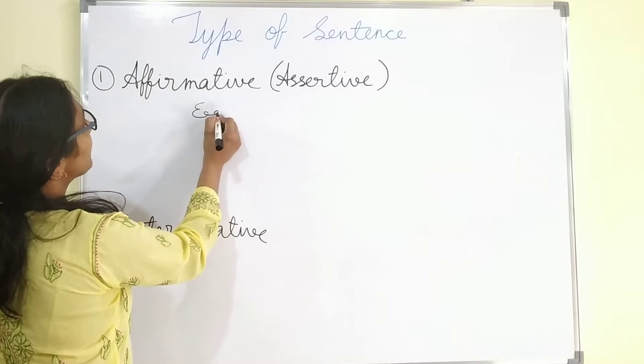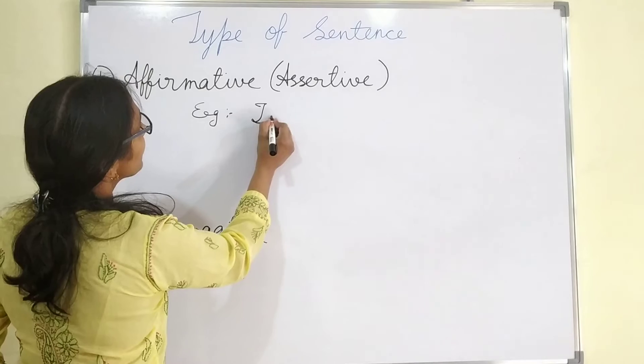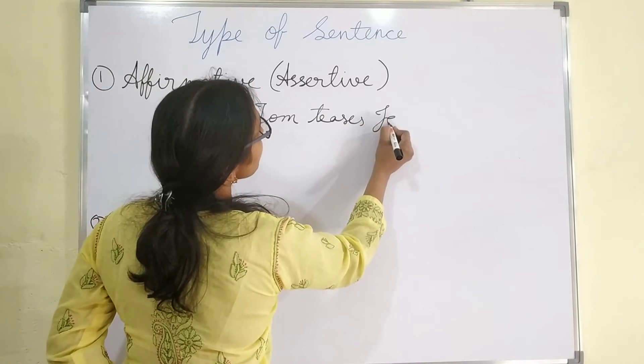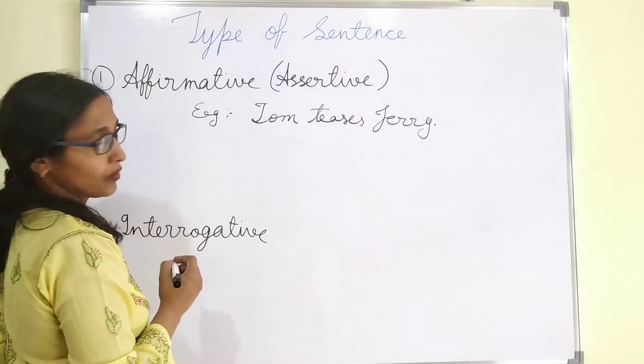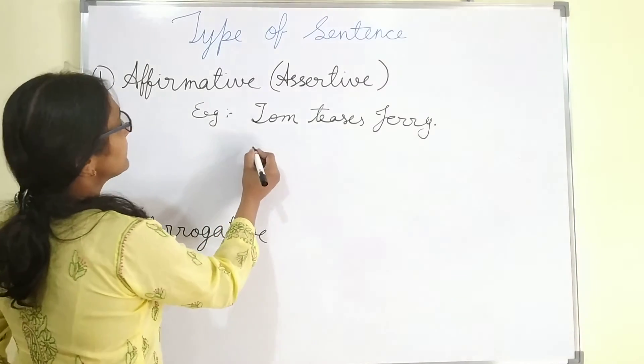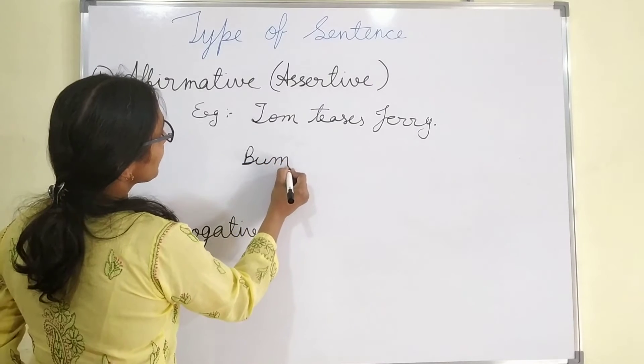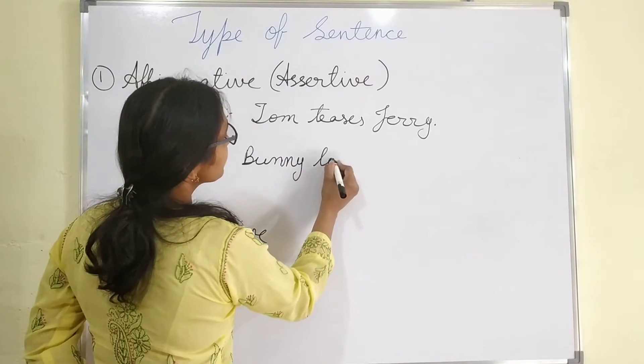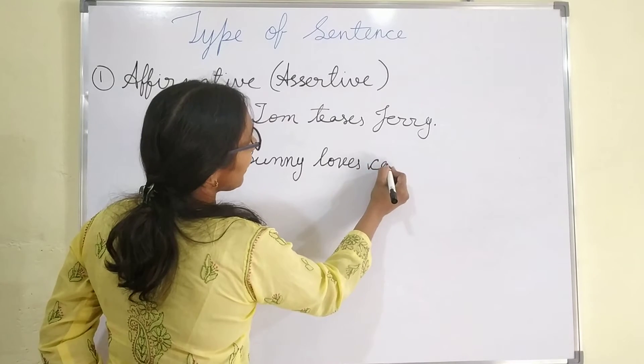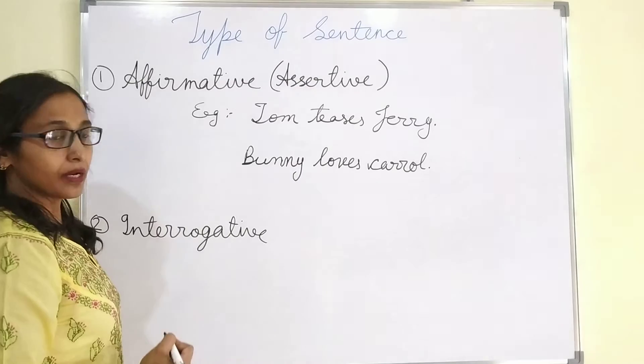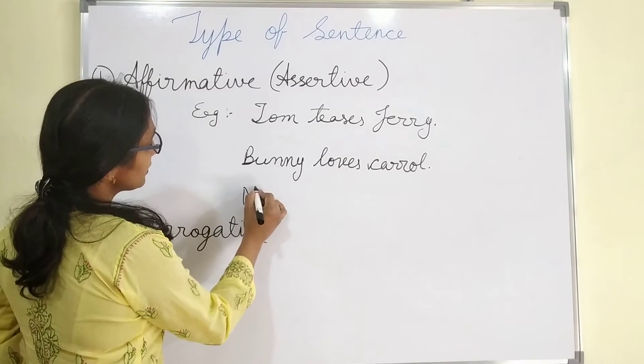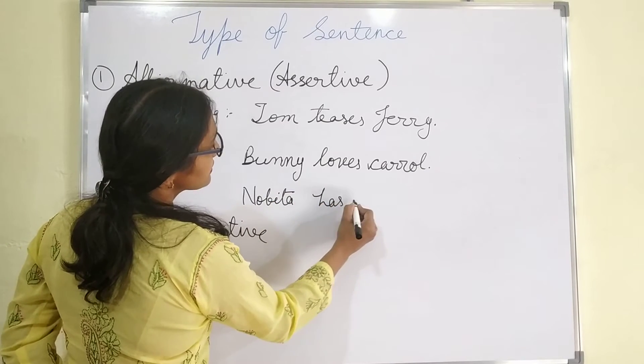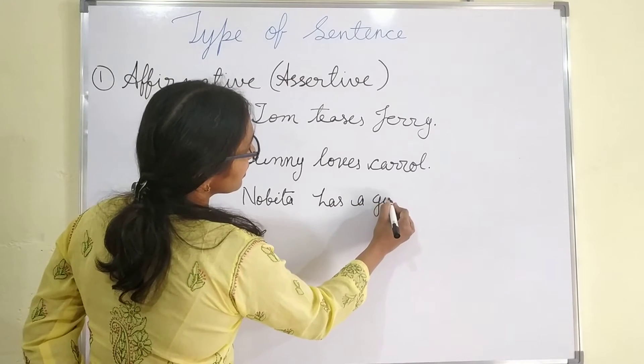Example, I am giving you examples. First, Tom teases Jerry. Next is bunny. Bunny loves carrot. Third is Nopita. Nopita has a girlfriend.